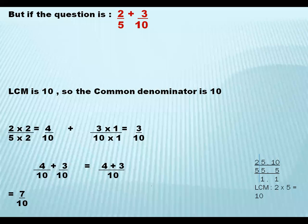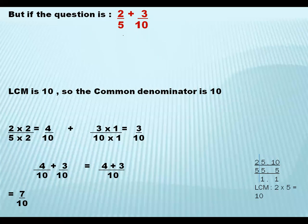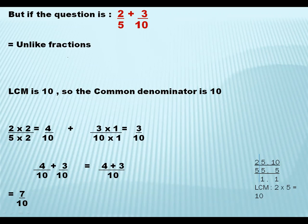Now the new topic we are going to learn today is adding and subtracting unlike fractions. I took the example 2 upon 5 plus 3 upon 10. How can you add fractions having different denominators? It is just like adding apples into oranges. So first you have to make them the same by taking the LCM of the denominators. These are unlike fractions, so we are going to follow the same steps as we did in the last lecture.